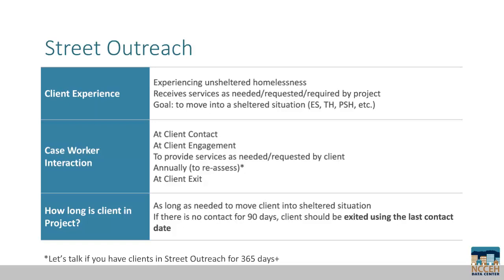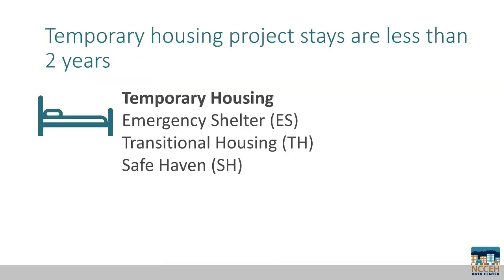There is no maximum length of time. However, if there is no contact for 90 days, the client should be exited using the last contact date. This is the last time the caseworker communicated with the client. Let's talk if you have clients in street outreach for more than a year, since it's pretty rare.